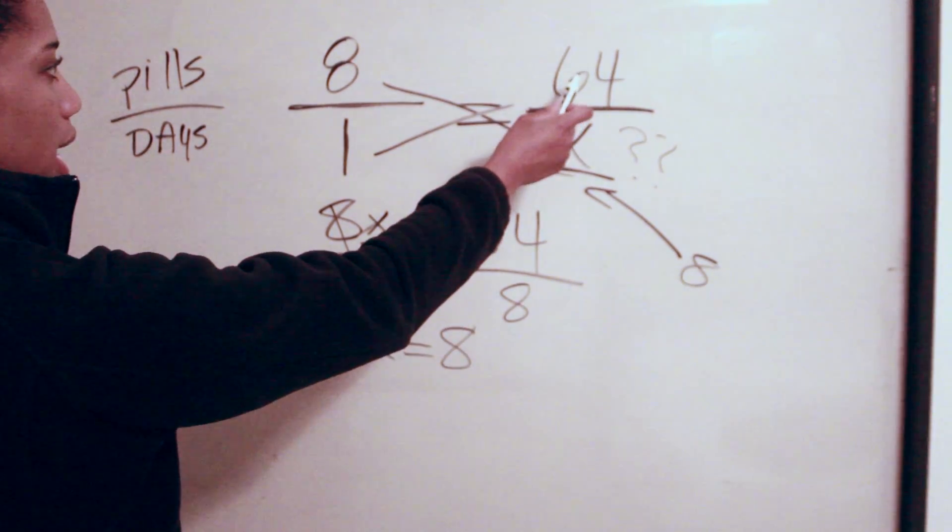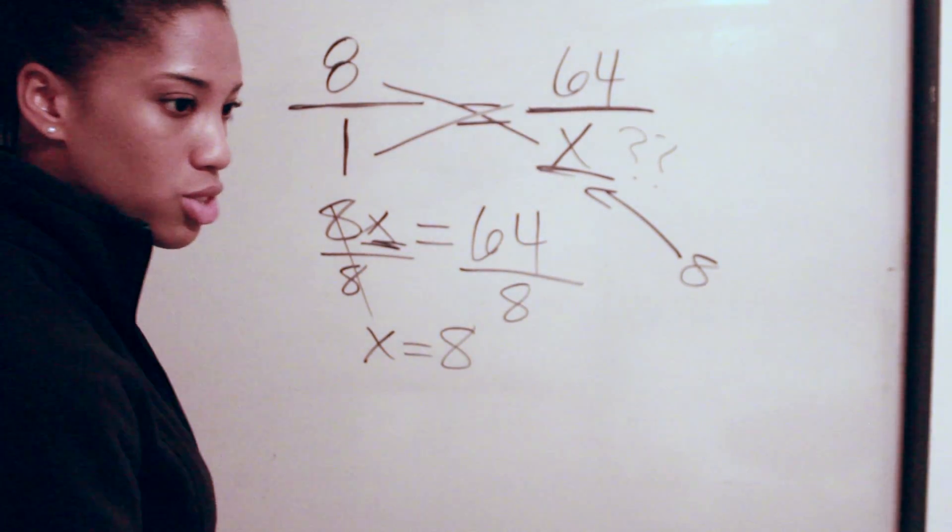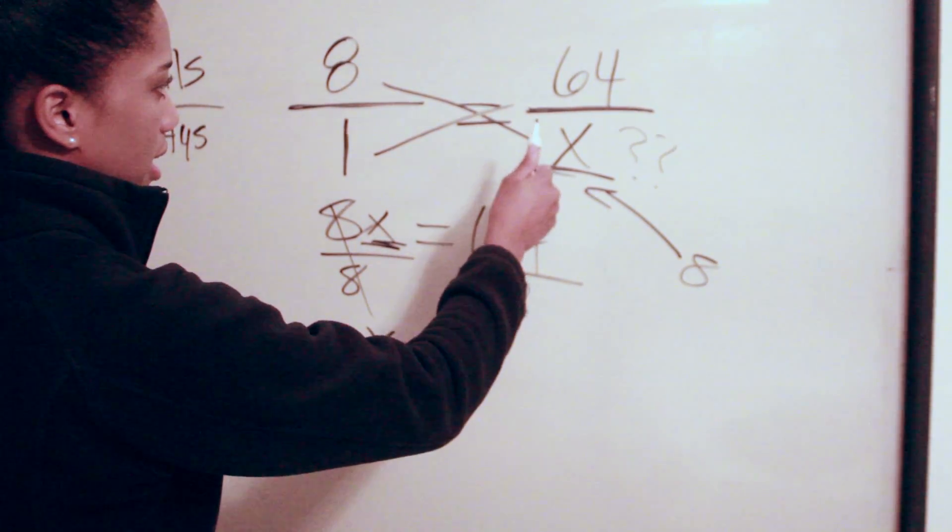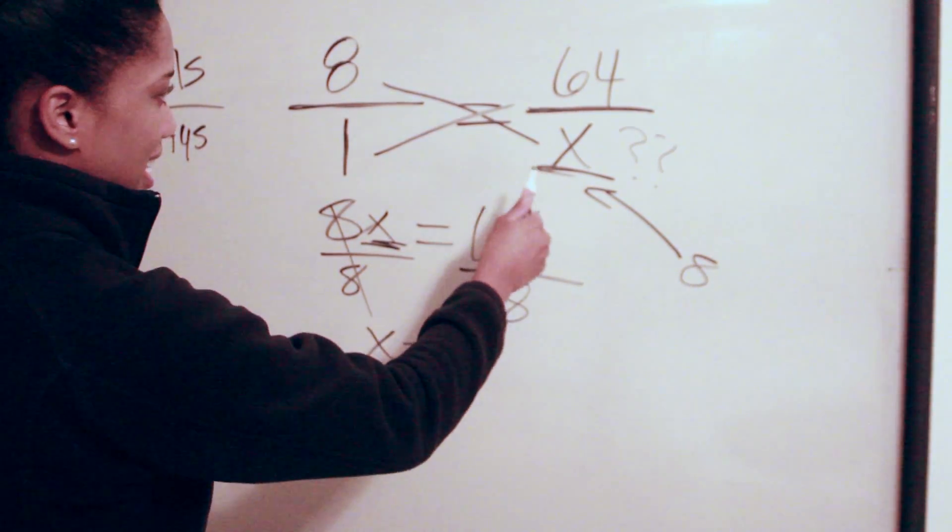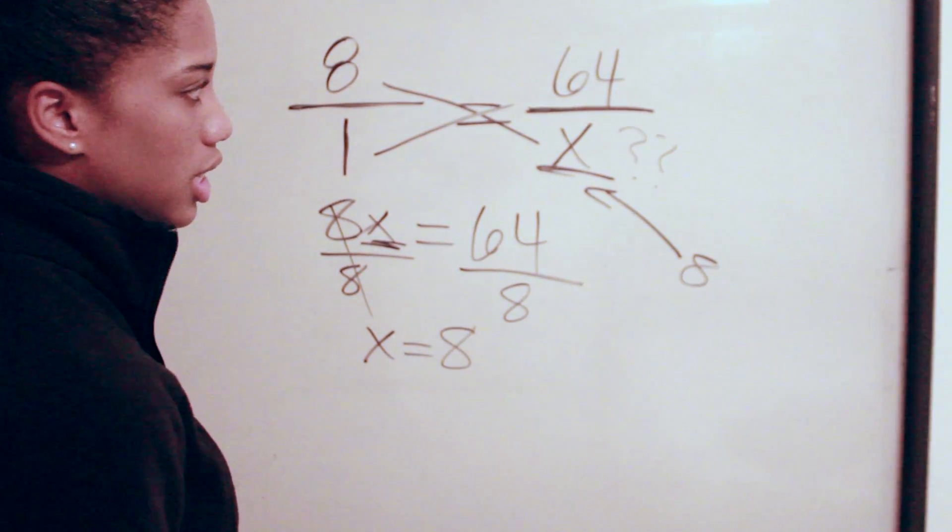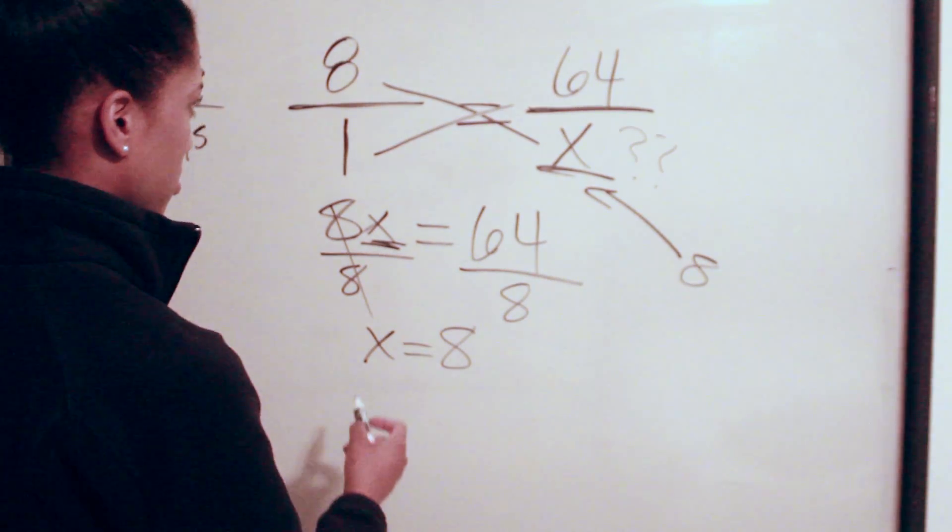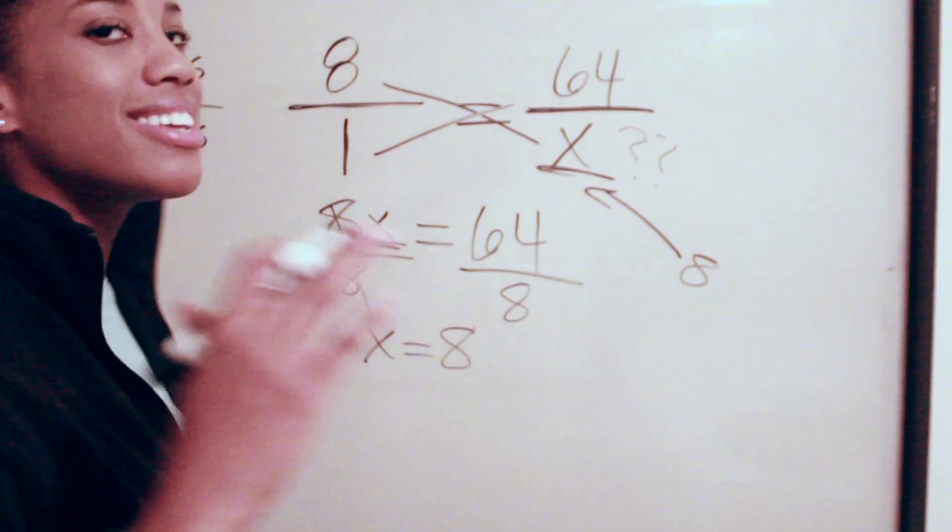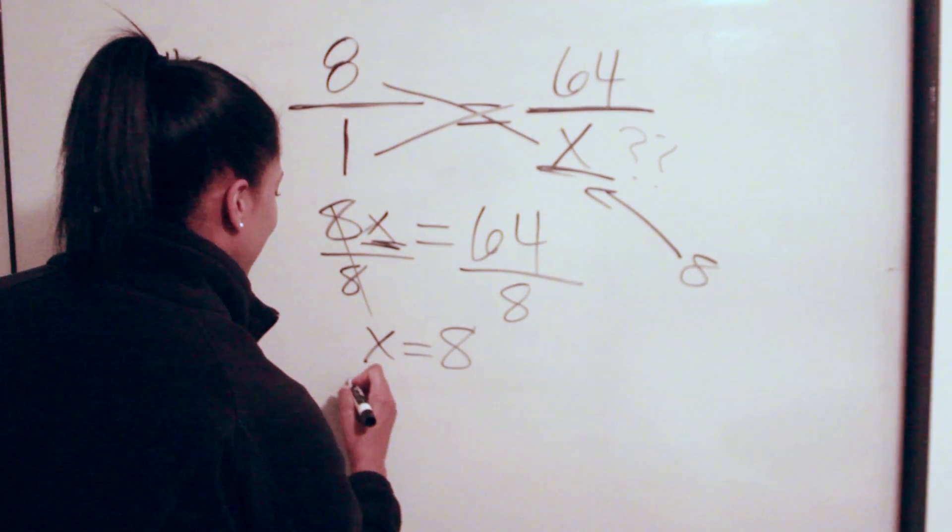We know that if this patient is administered 64 pills for their dosage, that means they're going to be taking eight pills each day. Over the amount of days, that's going to equal up to a total of eight days.